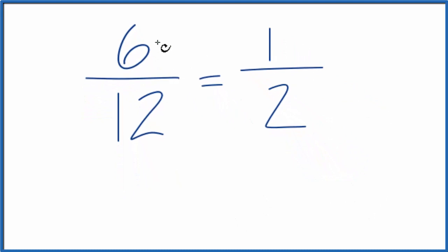If you took and divided 6 by 12 on your calculator, you'd get 0.5. If you divided 1 by 2, you would get 0.5. The same thing. They're equivalent fractions. We've just simplified 6 twelfths.